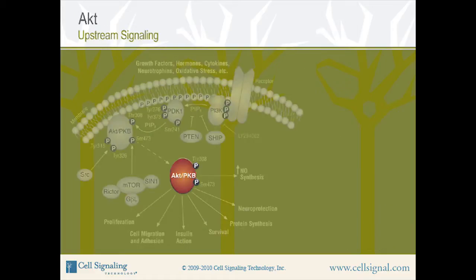Upstream signaling of AKT. The following is an overview of how AKT signals in the cell. A number of receptors at the cell membrane signal through AKT, including many receptor tyrosine kinases (RTKs), cytokine receptors, G-protein-coupled receptors (GPCRs), B-cell receptors, and integrin receptors. These receptors all signal to AKT via PI3 kinase and affect the phosphorylation state of numerous downstream targets. Now let's look in more detail at how a signal from a cell membrane receptor leads to the activation of AKT, a process called upstream signaling.